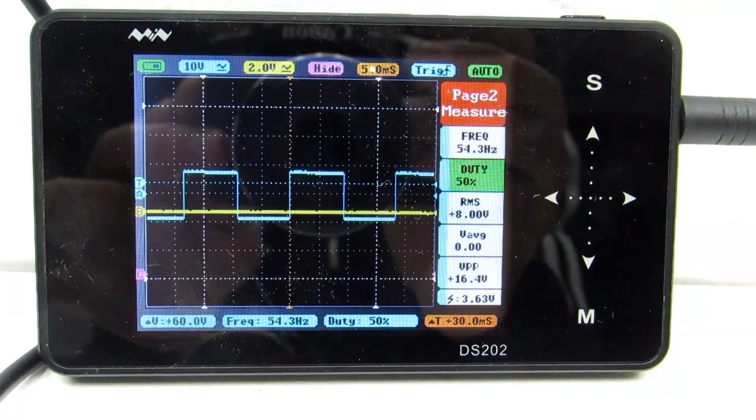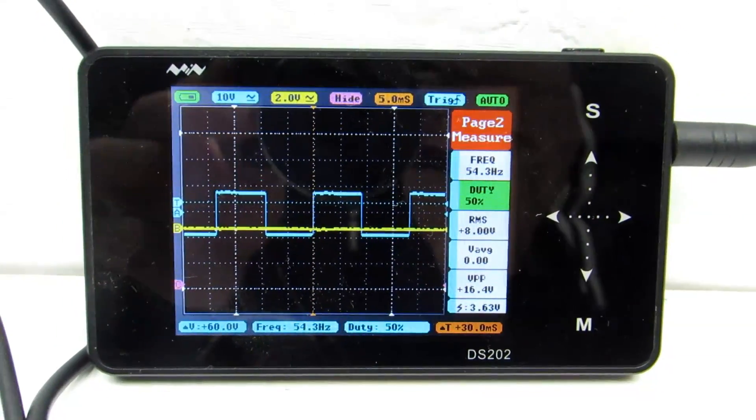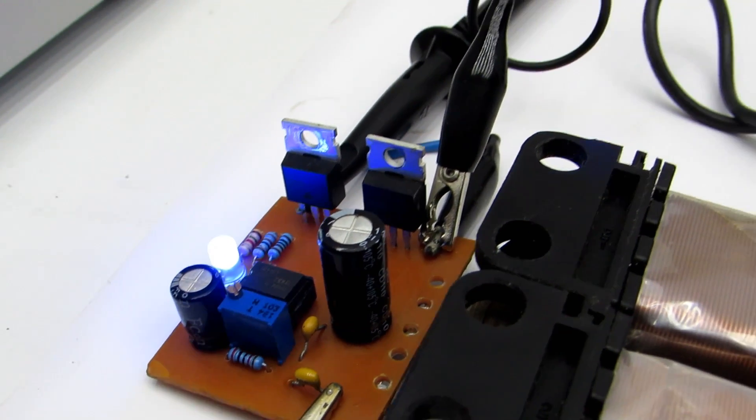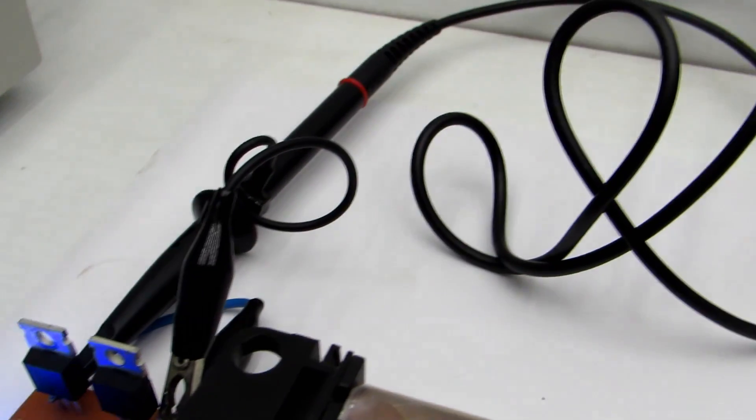This is voltage at the gate of one of the FETs. Duty cycle is 50% at a frequency of slightly more than 50 hertz. But, as already said, the frequency can be adjusted.